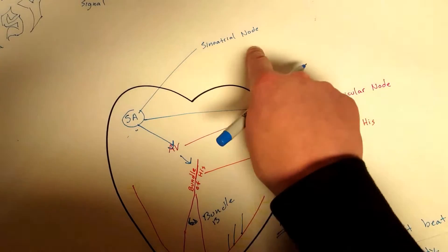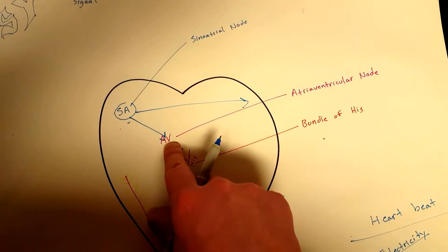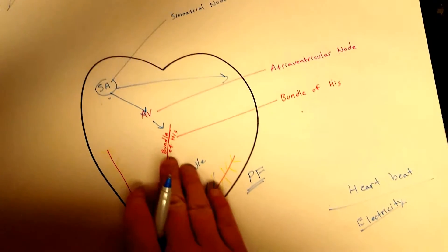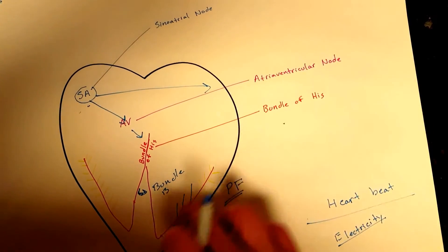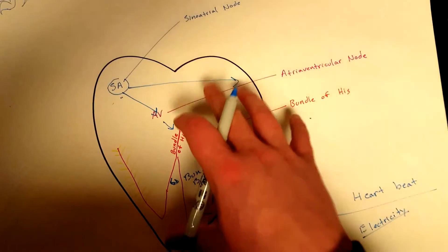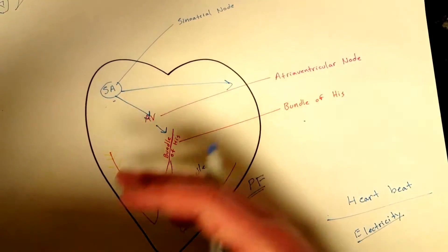The electricity is generated in the SA node or sinoatrial node, and then it travels down to your AV node, down to your bundle of His, splits off into your bundle branches, so right and left bundle branches, goes into your Purkinje fibers. And that is exactly how a heart is motivated or made to contract.